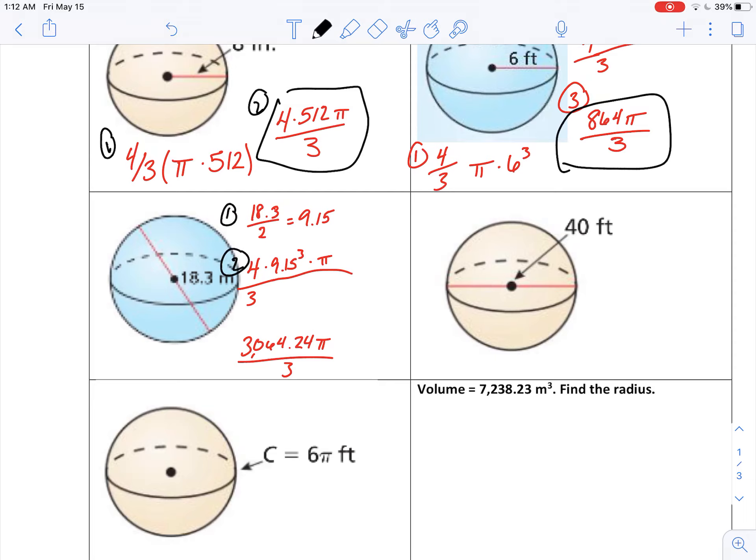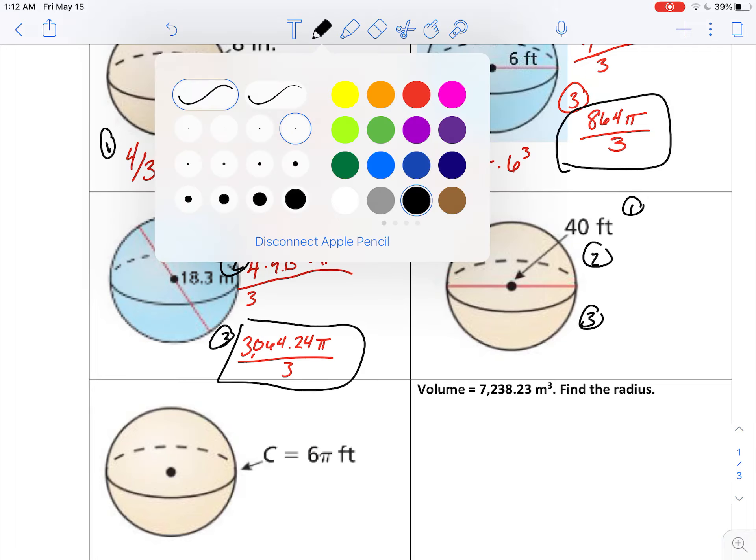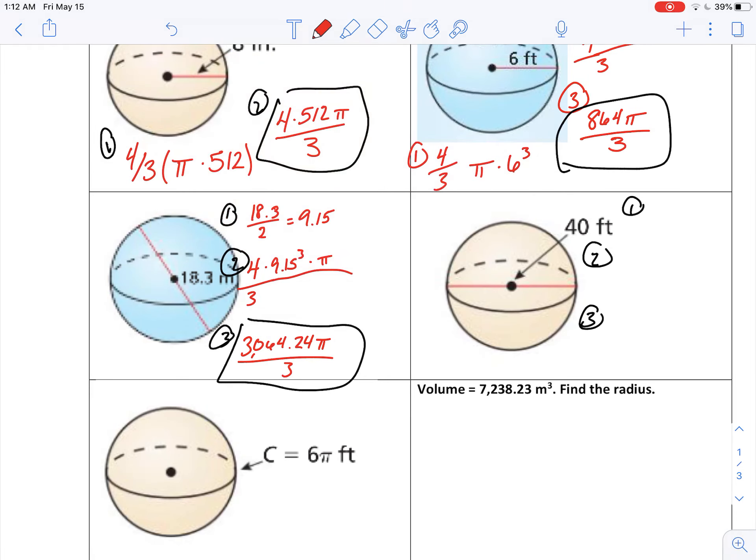So again, first step, find your radius, then substitute that value in and simplify. This one's a little bit easier, fewer decimals. So here's my first step: 40 is the diameter, I'll just cut that in half. So 20 is my radius, so 4 thirds pi times 20 cubed. So 8,000 times 4 is 32,000 divided by 3, 32,000 pi over 3.